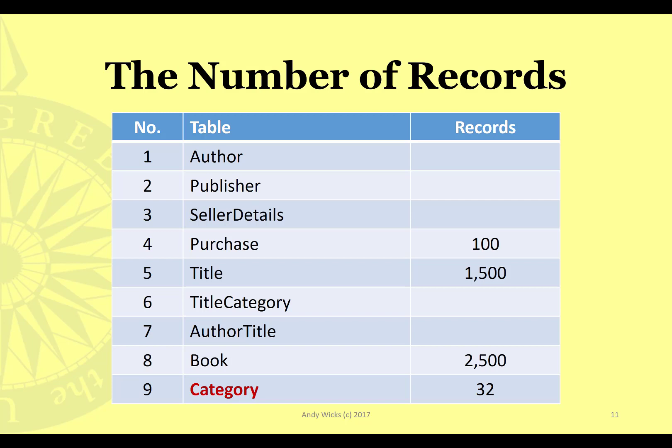Next, purchase. Where did we get these 2,500 books from? I'm assuming that there are 100 different places and people from whom we bought these books — that obviously has to be less than the number of books. Seller details: if we bought those 2,500 books in 100 batches, that's 25 books on average in a batch. But we may have made those purchases from 50 different sellers, so we're going to have 50 sellers — that obviously has to be less than the number of purchases.